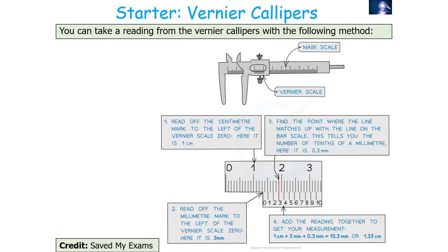To take a reading from vernier callipers: first secure the object. Then read off the centimetre mark to the left of the vernier scale — in this example it is 1 centimetre. Next read off the millimetre mark to the left of the vernier scale — here it is 3 millimetres. Then find the point where a line on the vernier scale matches up with a line on the main scale; that tells you the number of tenths of a millimetre — here it is 3, giving 0.3 millimetres.